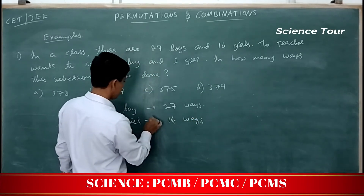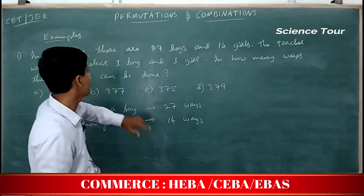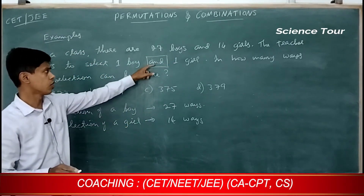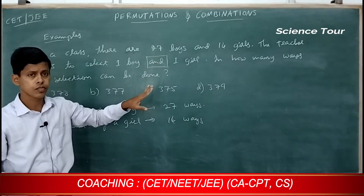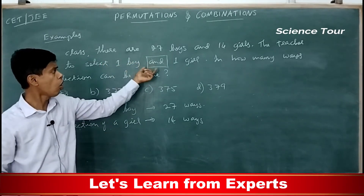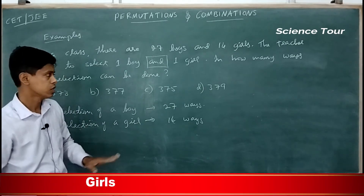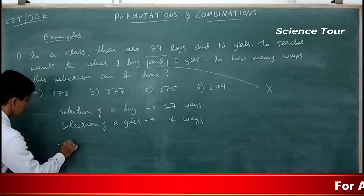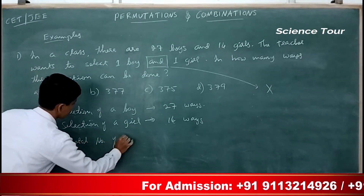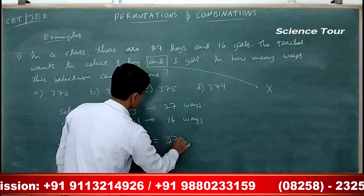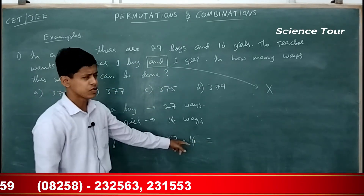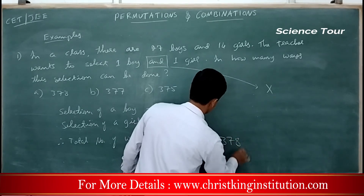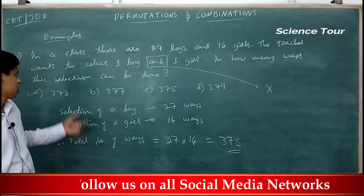Now, do you multiply or add? You have to select one boy and one girl — the word 'and' is the keyword. You need two students, so you multiply. Therefore, total number of ways is equal to 27 into 14. 27 into 10 is 270, 27 into 4 is 108, so 270 plus 108 equals 378. Totally 378 ways — option A is the answer.